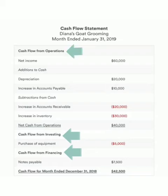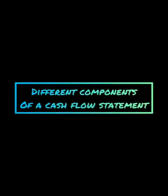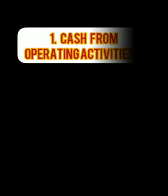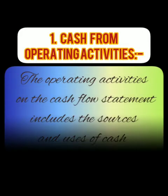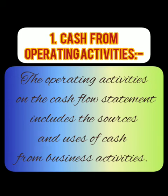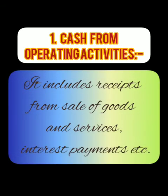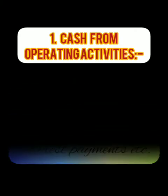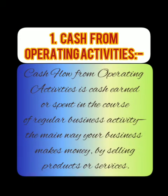Let's look at what each section of the cash flow statement does. The first one is cash from operating activities. The operating activities on the cash flow statement include the sources and uses of cash from business activities. It includes receipts from sale of goods and services, interest payments, etc. Cash flow from operating activities is cash earned or spent in the course of regular business activity — the main way your business makes money by selling products or services.